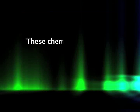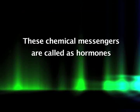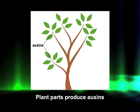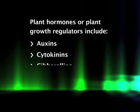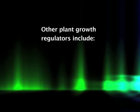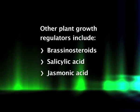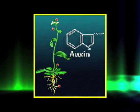Growth and development in higher plants are regulated by chemical signals. These chemical messengers, called hormones, are often synthesized in one part and transported to another part where they produce their effects. They have dramatic effects on plant growth and development at vanishingly small concentrations. Plant hormones, also known as plant growth regulators, include auxins, cytokinins, gibberellins, ethylene, and abscisic acid. There is also ample evidence for the role of brassinosteroids, salicylic acid, and jasmonic acid as plant growth regulators.